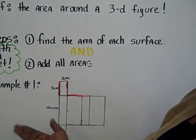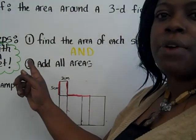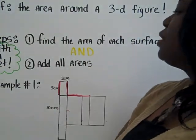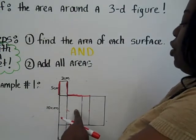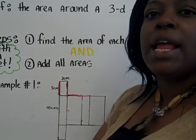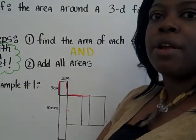If you're given a net, such as this one of a rectangular prism, for example, there's two steps that you need to follow. Step number one is to find the area of each surface, or in other words, of each shape that is represented in the net. Step number two is to then add all those areas together.